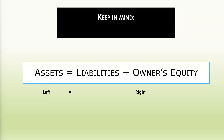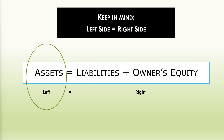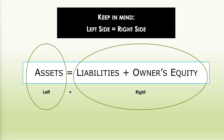Keep in mind, for the accounting equation, the left side is equal to the right side. Assets equal liabilities plus owner's equity. Left equals right.